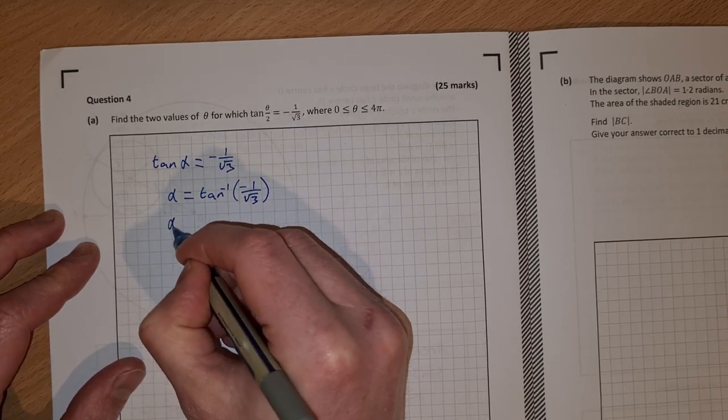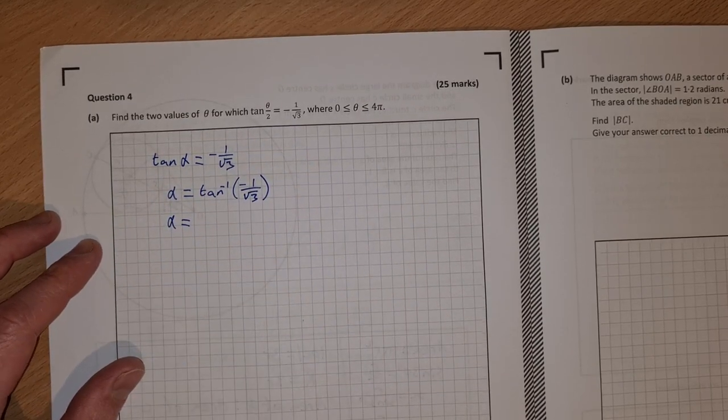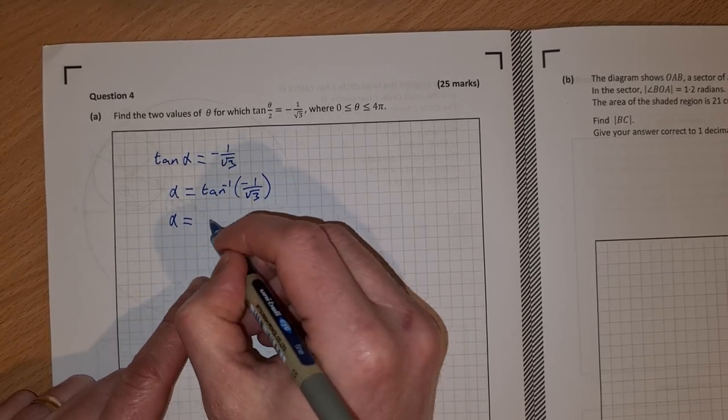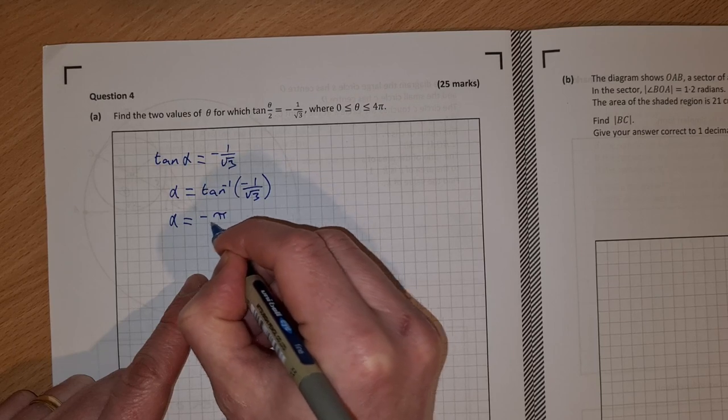We can find that in our log tables or on your calculator. Just make sure you're using radians. Alpha is equal to minus pi over 6.